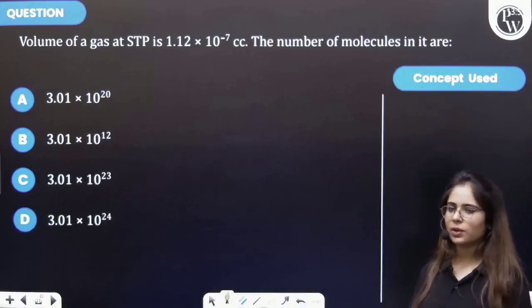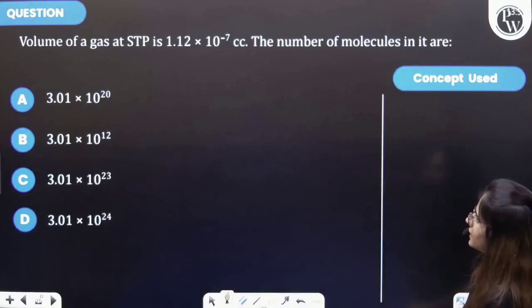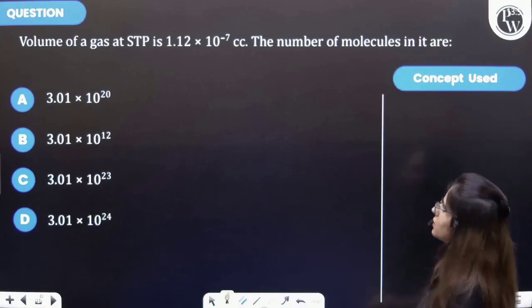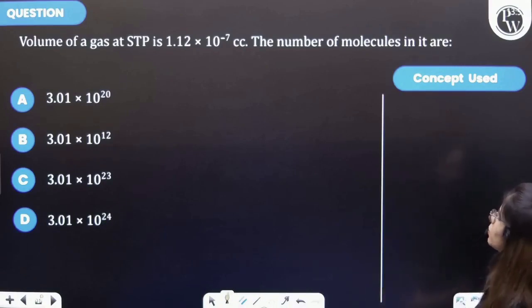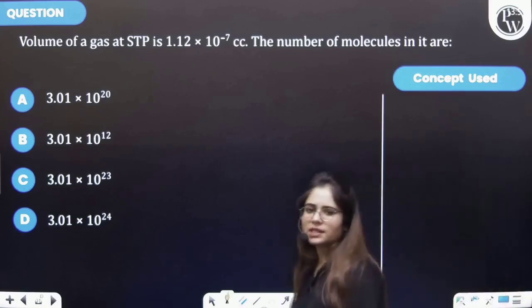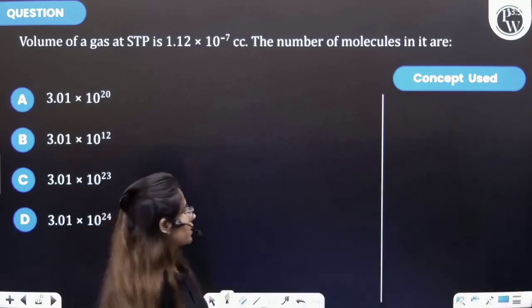Let's see this question. The question says that volume of a gas at STP is 1.12 into 10 raised to the power minus 7 centimeter cube and the number of molecules in it are. So let's firstly see the key concept of this question.